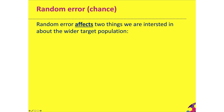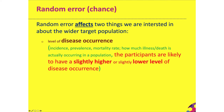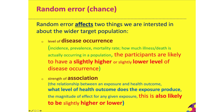Random error affects two key things we are interested in about the wider target population: the level of disease occurring — incidence, prevalence, mortality rate — and we will find that participants in our research study are likely to have a slightly higher or lower level of disease occurrence. Similarly, the strength of association — the relationship between exposure and health outcome — is also likely to be different, potentially slightly higher or lower than the true level of effect in the wider population.